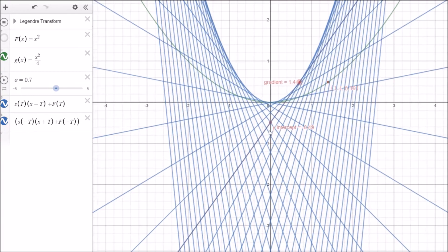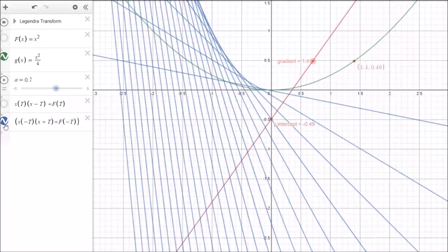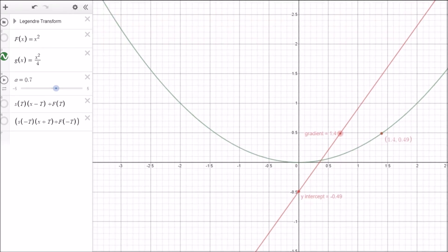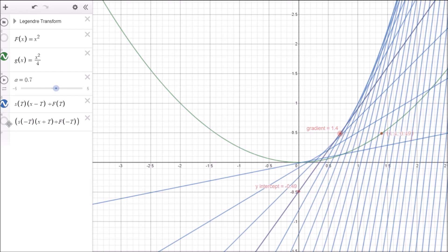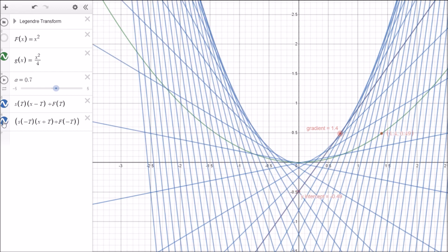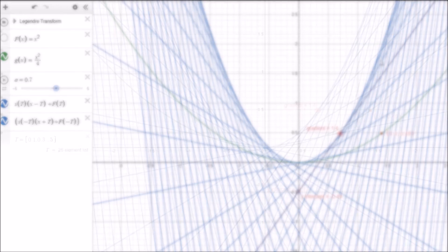But of course, what we notice here is that the actual Legendre transform is a continuous function. So it's got an infinite number of these gradients and also the y-intercepts. So this function here, in effect, contains all the information we need in order to generate an infinite number of these lines. And let's put in a few more of them and we'll see our function appearing.